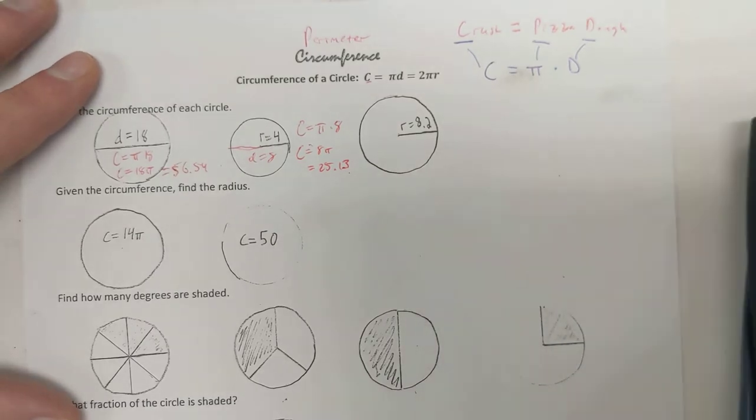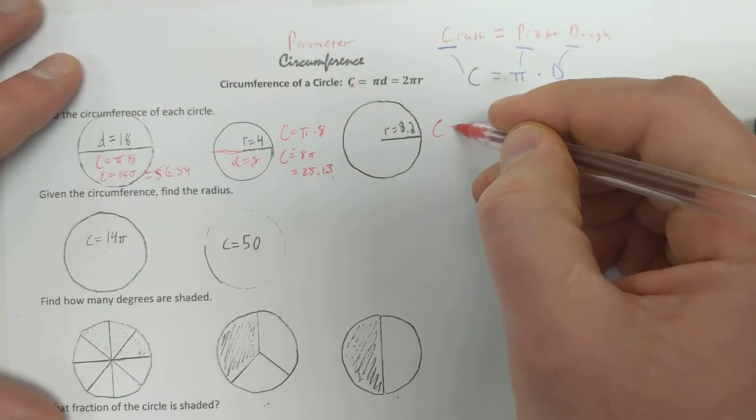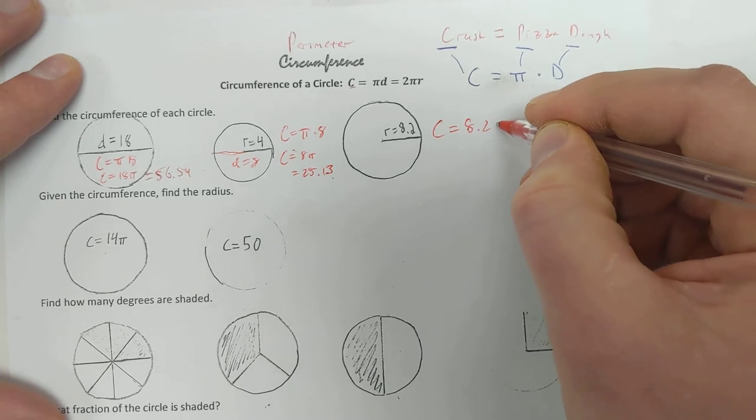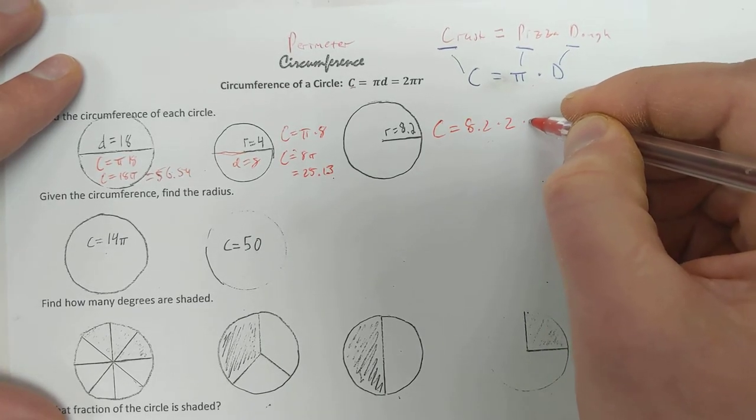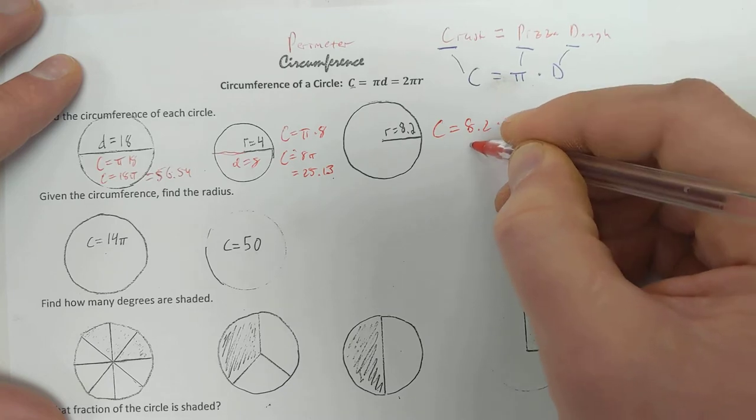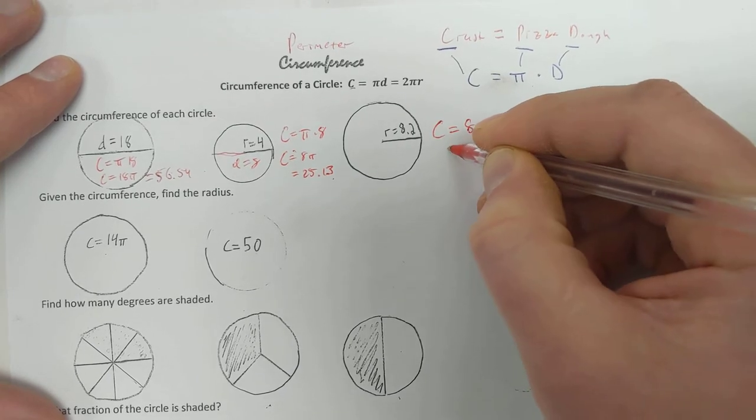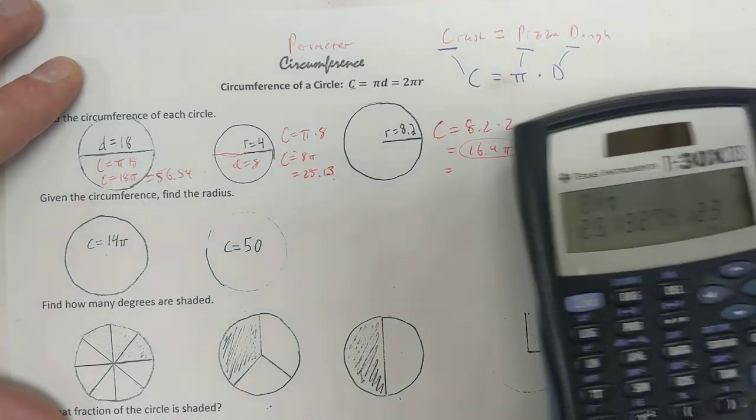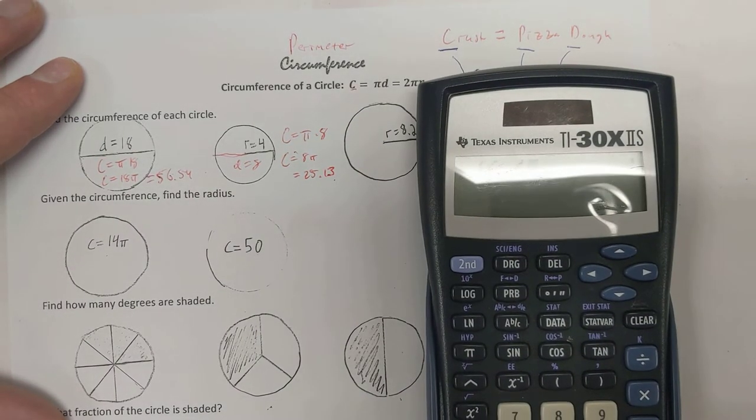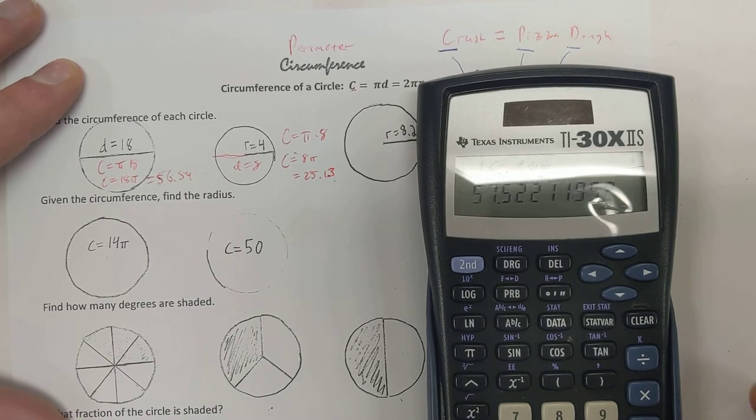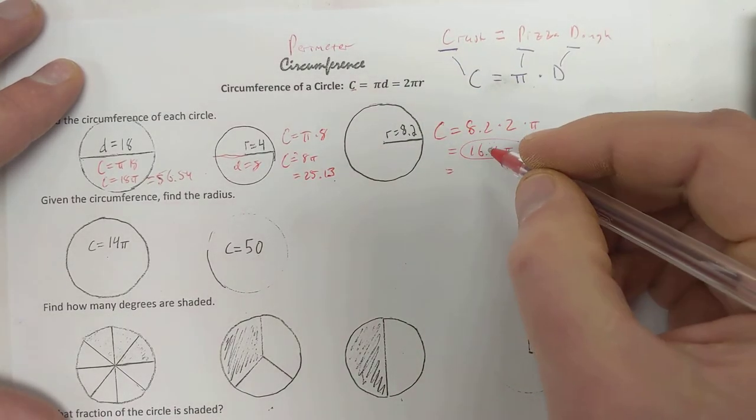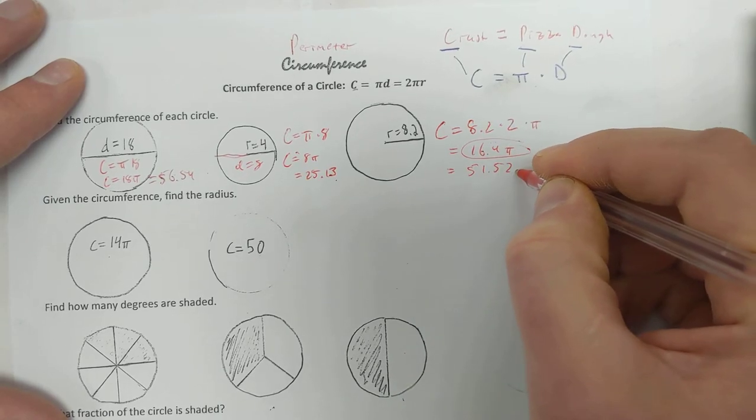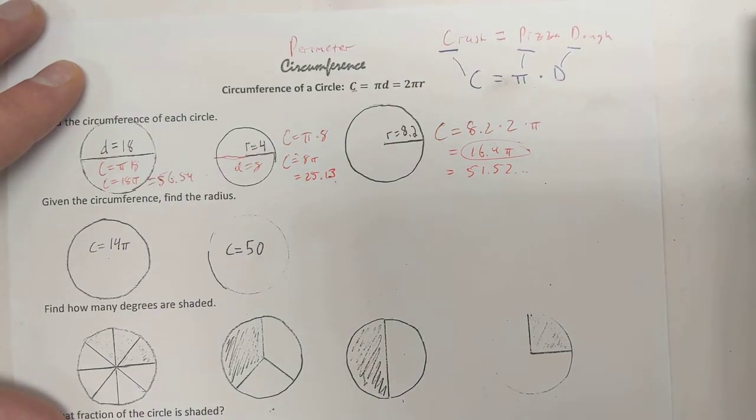Looking good. The next one, same sort of thing. Circumference is going to be 8.2 times 2 times pi, because this will give me the diameter. So 16.4 pi. That's an acceptable answer. Or if you actually multiply it out, 16.4 times pi, 51.52. Okay. There we go. Moving on.